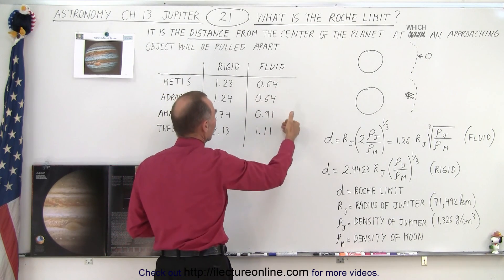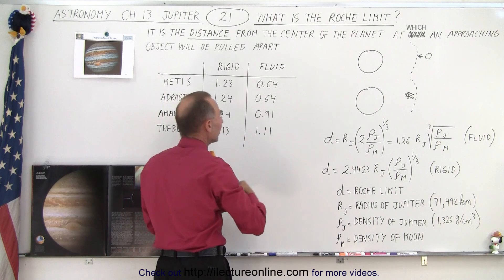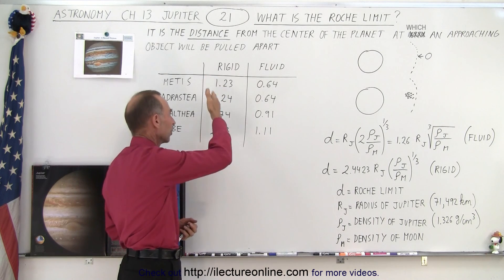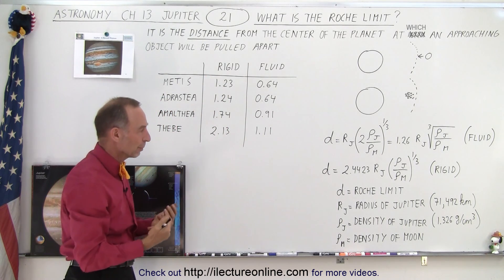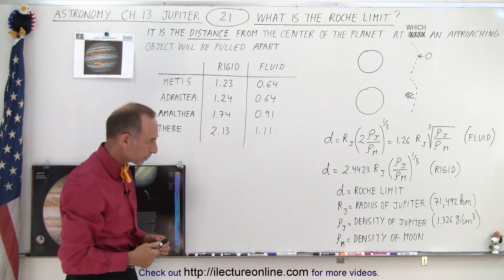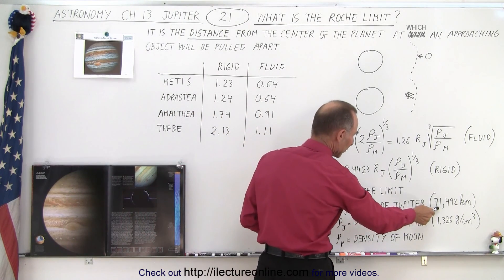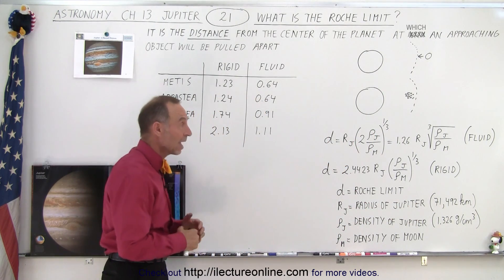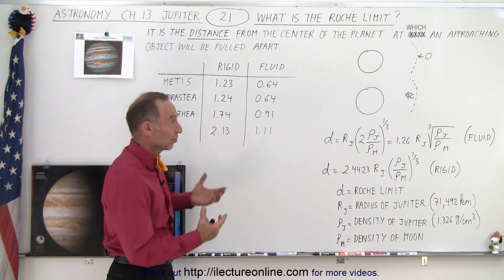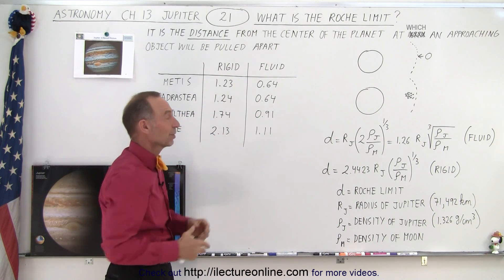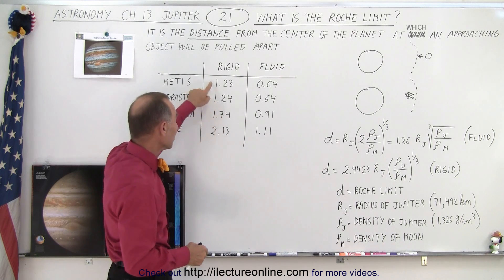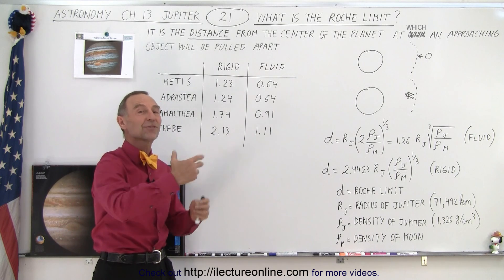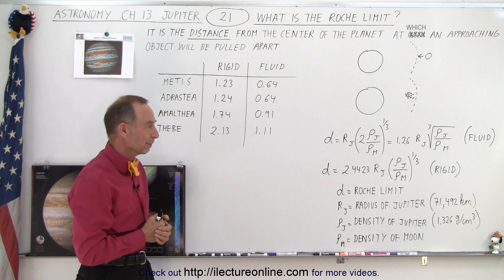Now, if they were made out of a fluid material, notice that the first three moons would have easily been pulled apart because of the gravitational forces of Jupiter. But they're not — they're solid — and so therefore they are far enough away from Jupiter not to be pulled apart. Notice here the radius of Jupiter is 71,500 kilometers and the density about 1.326 grams per cubic centimeter. If we had a moon that was the size of Jupiter but rocky in material, it would be much more dense, and any moon venturing that close to the planet would simply be shredded apart, forming a nice ring system around Jupiter.